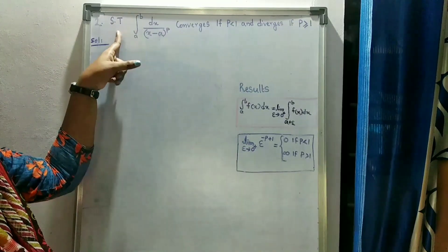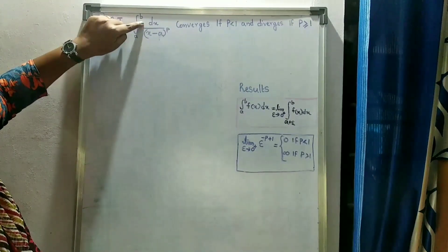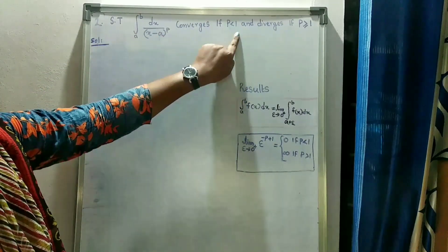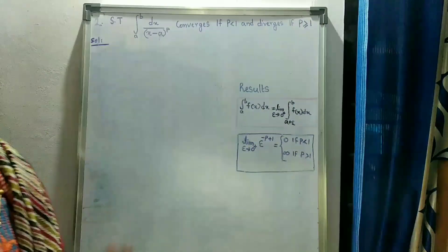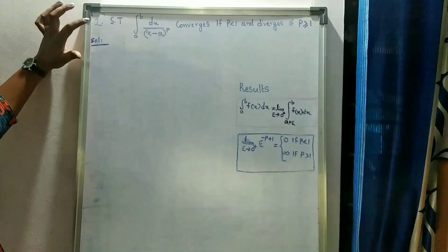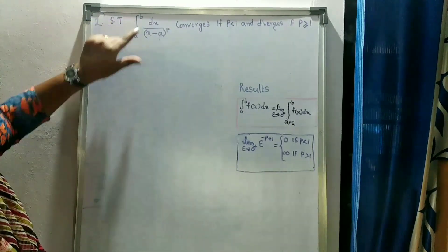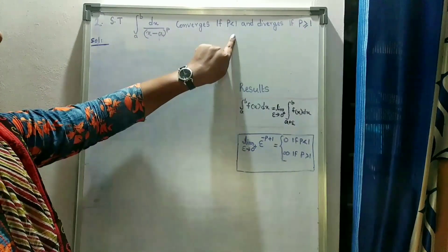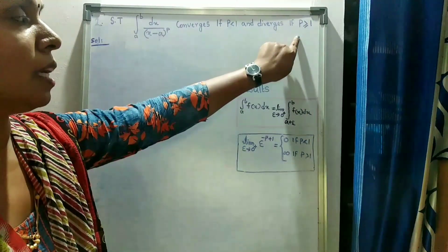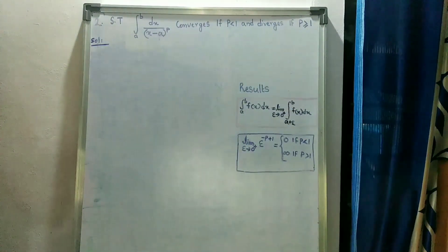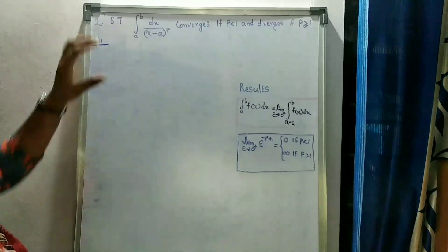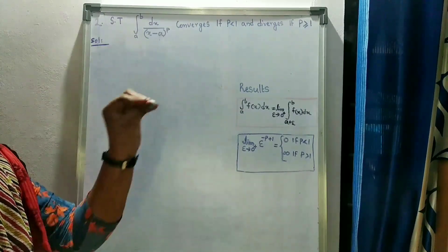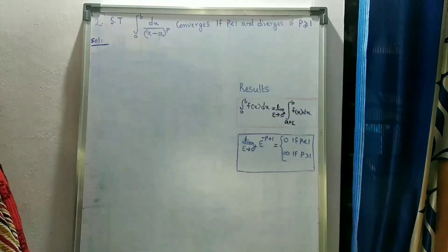Show that the integral from a to b of dx divided by (x minus a) raised to p converges if p less than 1 and diverges if p greater than or equal to 1.